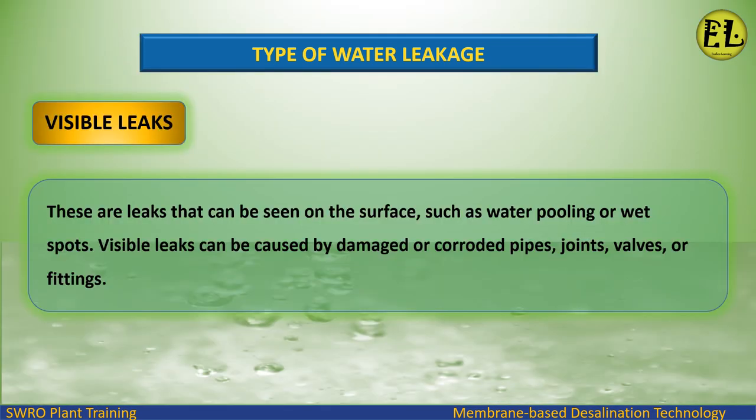Visible Leaks. These are leaks that can be seen on the surface, such as water pooling or wet spots. Visible leaks can be caused by damaged or corroded pipes, joints, valves, or fittings.